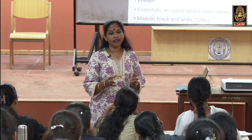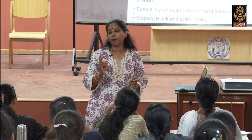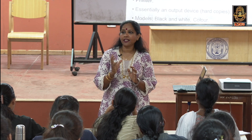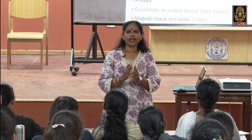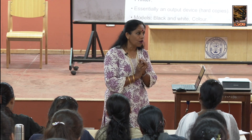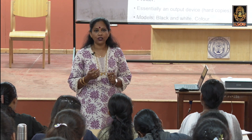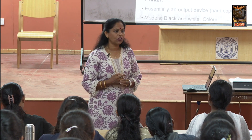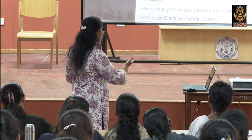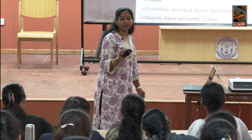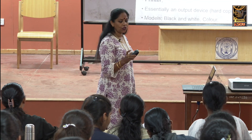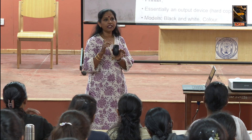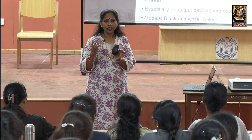The earlier two-button mouse had one ball at the base that used to move in the x, y direction. After prolonged use, dust would accumulate inside the mouse, so you had to clean it regularly with spirit. Now we have a new cordless mouse with three buttons: left, right, and a scrolling wheel. The scrolling wheel is for moving the screen up and down.